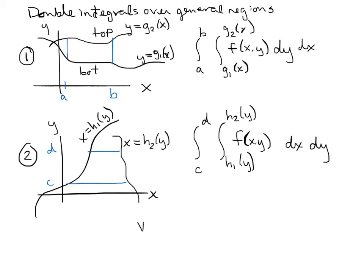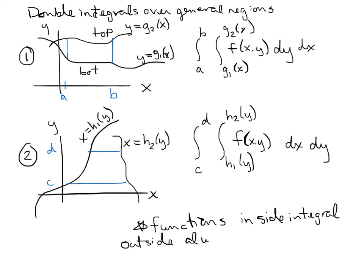The important thing to notice in both cases is that the functions are always on the inside integral. We can only evaluate an integral and get an actual number if the functions are on the inside and we have numbers on the outside. If those are switched, we'll end up with functions at the end — and if we're looking for volume, that doesn't make sense. The outside integral always has numbers — no exceptions.